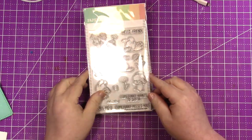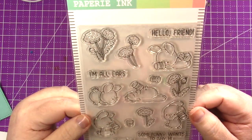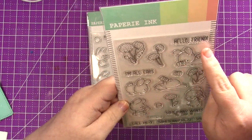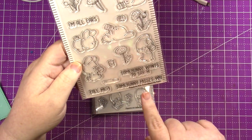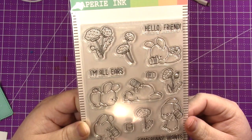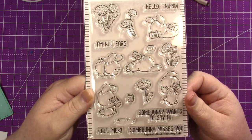This is called Some Bunny Talk. So it's little bunnies with cans. So it says I'm all ears, hello friend, somebody wants to say hi, somebody misses you, call me. Cute, cute.